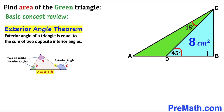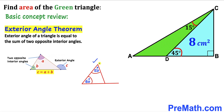Here we have exterior angle C whereas A and B are our opposite interior angles, such that C equals A plus B. Here's an example: this exterior angle is equal to the sum of these two opposite interior angles, so this angle is going to be 50 plus 60, making 110 degrees.